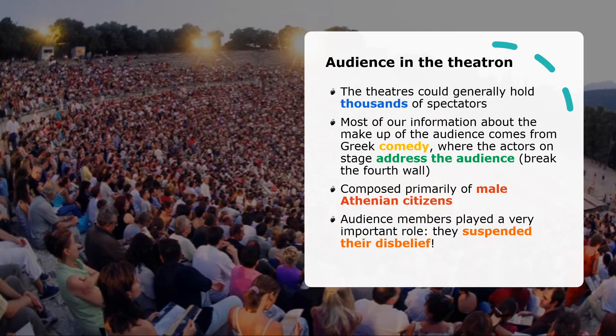If you want to identify a majority group, it was male citizens — the group for whom tragedies were primarily written. Like the competition angle, this offers another interesting way of thinking about the tragedies: what were they saying to this particular group? The audience played a really important role in that they all agreed to suspend their disbelief and give themselves over to the tragedy — agreeing to believe that the masked actor is Medea or Oedipus.